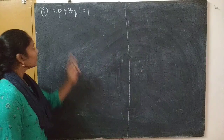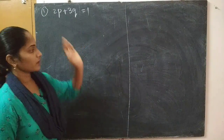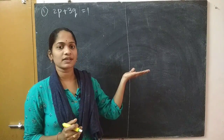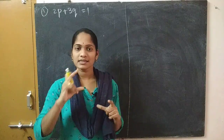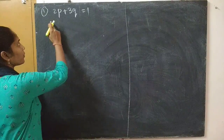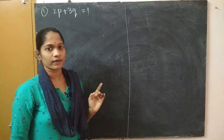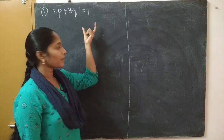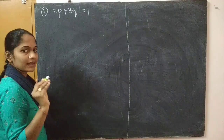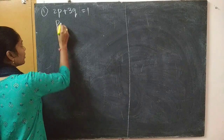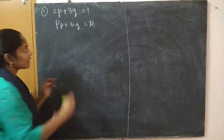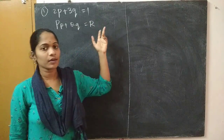The first problem is: 2p plus 3q equals 1. Before solving, note that you have to write this in the quasi-linear PDE form, that is Pp plus Qq equals R. This is a quasi-linear PDE.